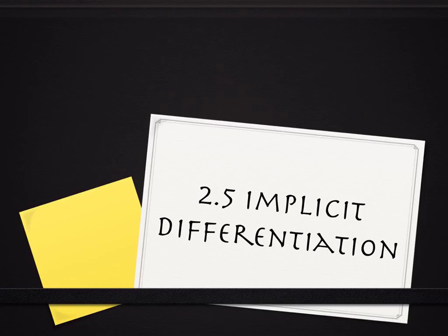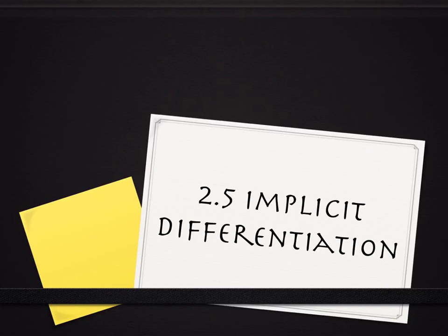Section 2.5 is called Implicit Differentiation. The first thing I want to talk through with you is what it means to differentiate something implicitly compared to what you've been doing. What you have been doing — we haven't called it this — is called Explicit Differentiation.